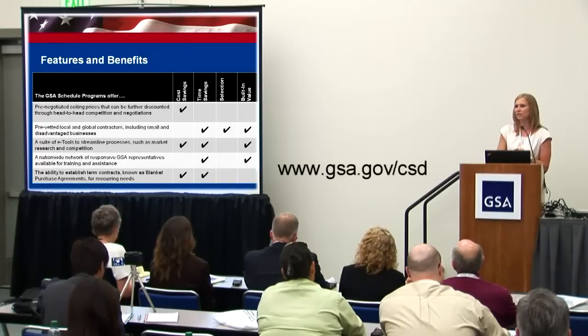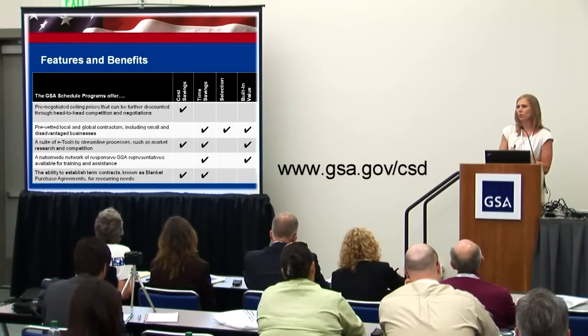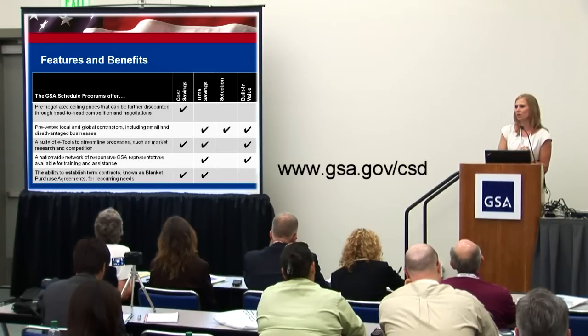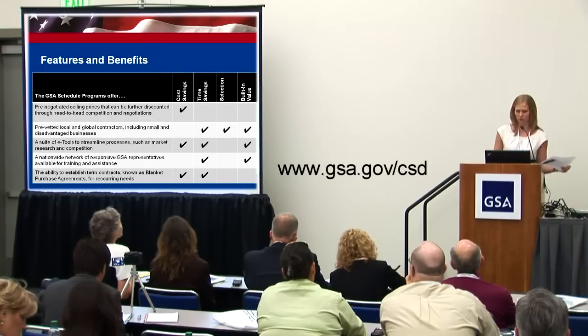Customer service directors will be around the floor working the booths — your hall monitors — so please introduce yourselves. If you don't know how to find that person, here's a website: gsa.gov/CSD — C as in cat, S as in Sam, D as in dog. Click on the map and you'll be able to find your local customer service director.